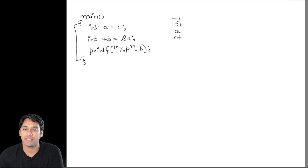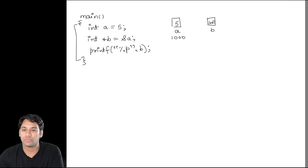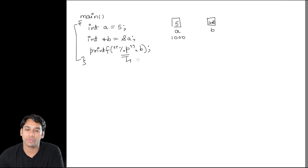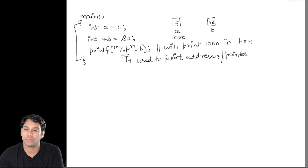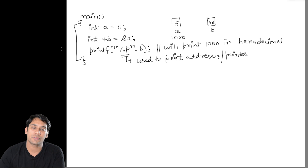Let us suppose the base address of this variable a is 1000. Now we have a pointer b, and b is storing the address of variable a, so it is storing 1000. In the printf statement I am printing b using %p, which is used to print addresses or pointers. So when we execute this program, it will print 1000 in hexadecimal.